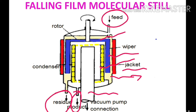Here you can see a feed inlet, a product outlet, and also a residue outlet. The feed inlet is for introducing feed into the vessel. The product outlet is for collecting distillate from the condenser into a receiver. The residue outlet is for collecting undistilled material from the vessel into another container.